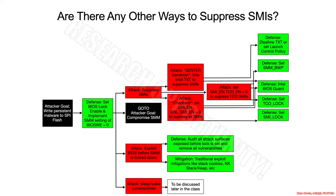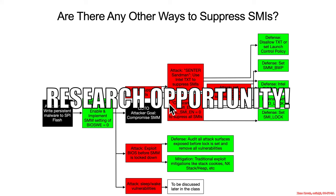In general, this is a potential research opportunity — are there other ways to suppress SMIs? This is not the best research opportunity because these days people should be using protected range registers in addition to BIOS lock-enable. But you can find systems out there that are not using protected range registers properly, and if they're only depending on this, then if you can find some new SMI suppression mechanism, you may be able to break into the BIOS.